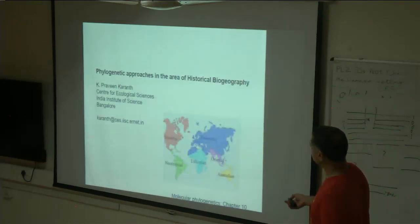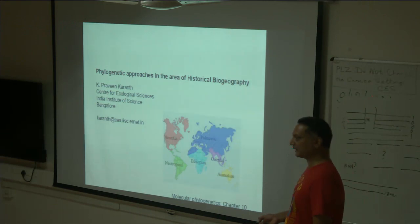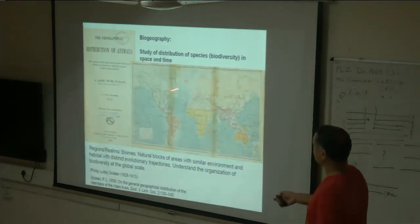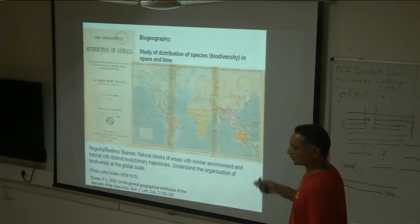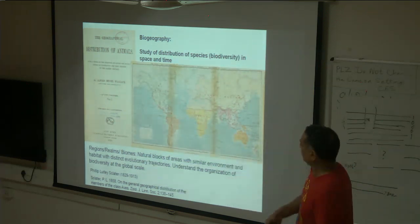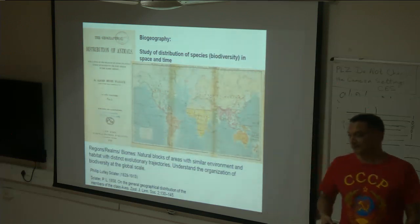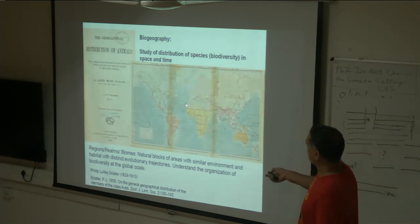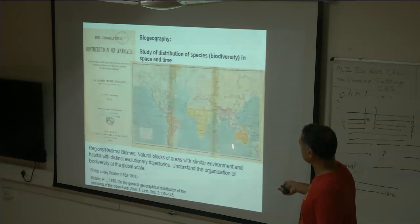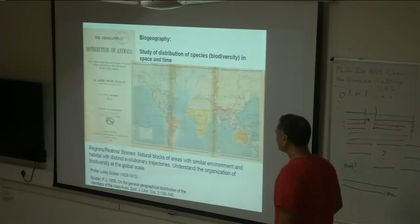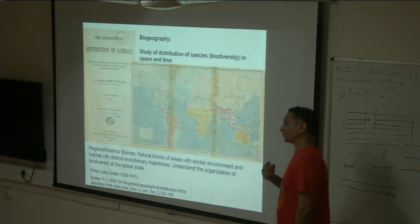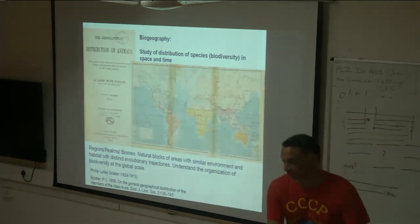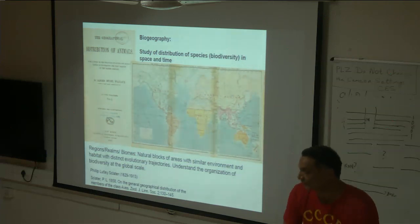I'm sure most of you have seen this image. This is the original image. Biota — both flora and fauna — have been divided into these major realms, biogeographic realms: the Palearctic region, Ethiopian, Oriental, Australian, Neotropical, and Nearctic. This work was done by Wallace, the co-discoverer of the theory of evolution through natural selection.